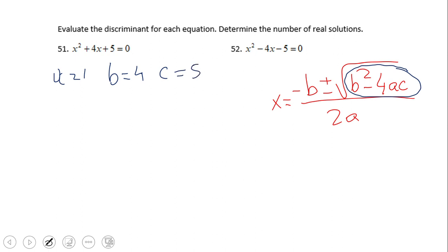Okay, so we're going to plug this value into this discriminant, b squared minus 4ac. So this one becomes 4 squared minus 4 times 1 times 5.